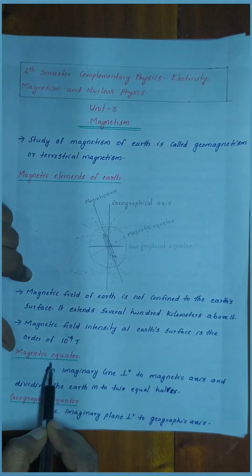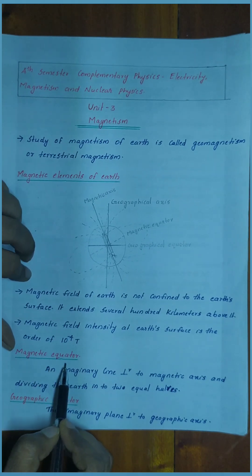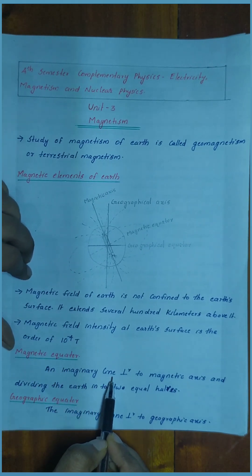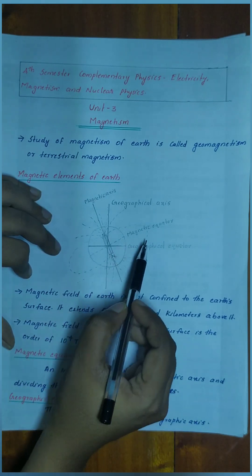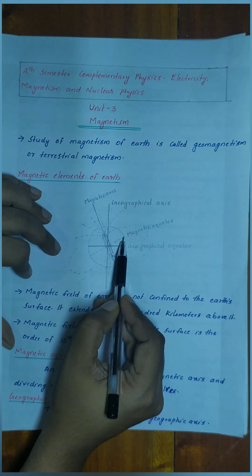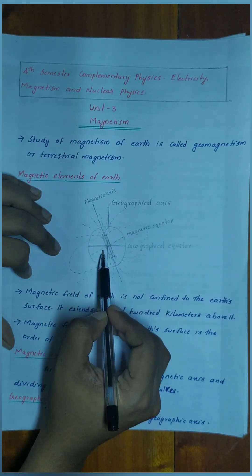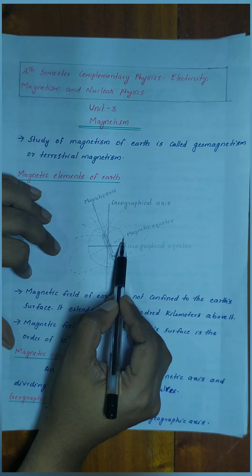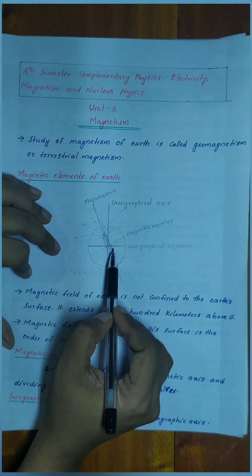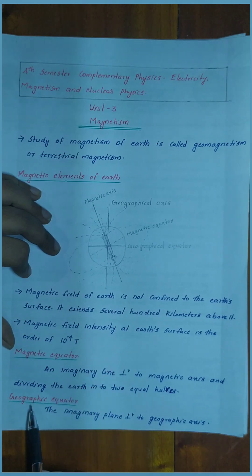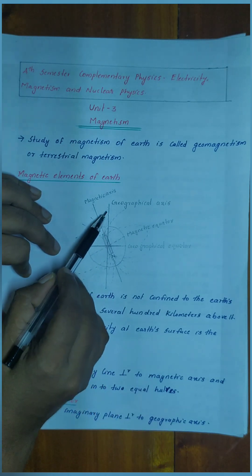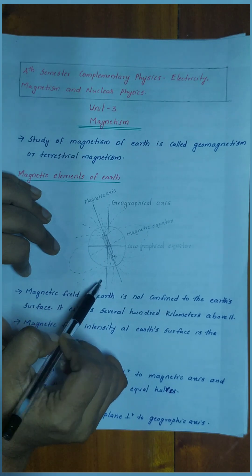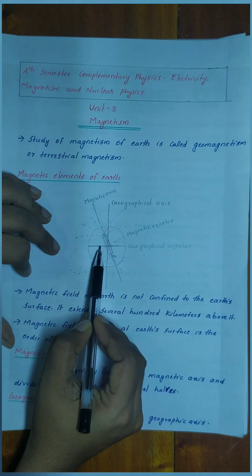This axis is the magnetic axis. The magnetic equator is an imaginary line which is perpendicular to the magnetic axis and divides the earth. The geographical equator is the imaginary plane perpendicular to the geographic axis, meaning the geographical axis is perpendicular to that imaginary plane.